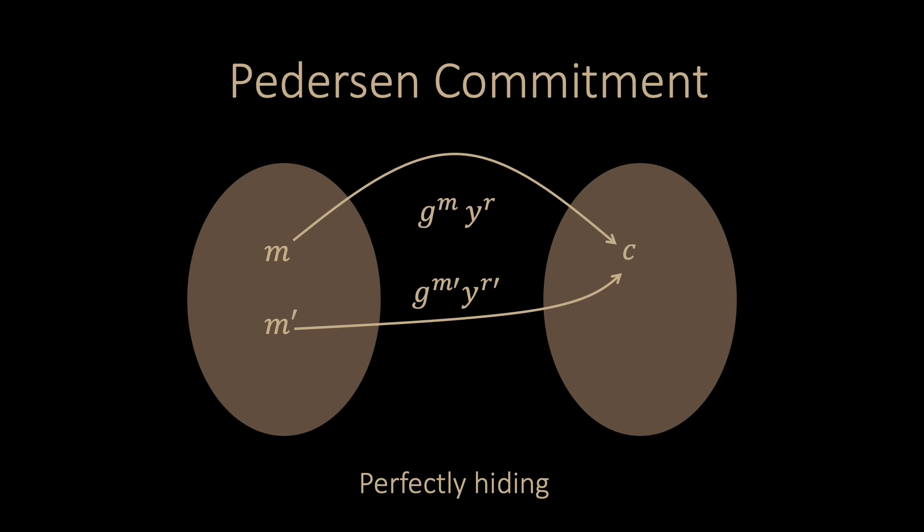This means that if you see a commitment c, then there is no way for you to tell which is the committed value, since all of them could be the committed value and all of them are equally likely. There is a one-to-one mapping from the message space to the random numbers that lead to the same commitment.